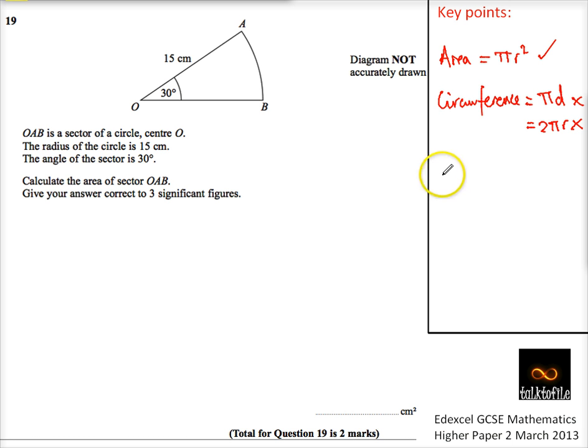So to work out a sector, well, that's just a fraction of a whole circle. So if I want to work out the area of OAB, well, it's πr² which is what I want, but I want to times it by a fraction.